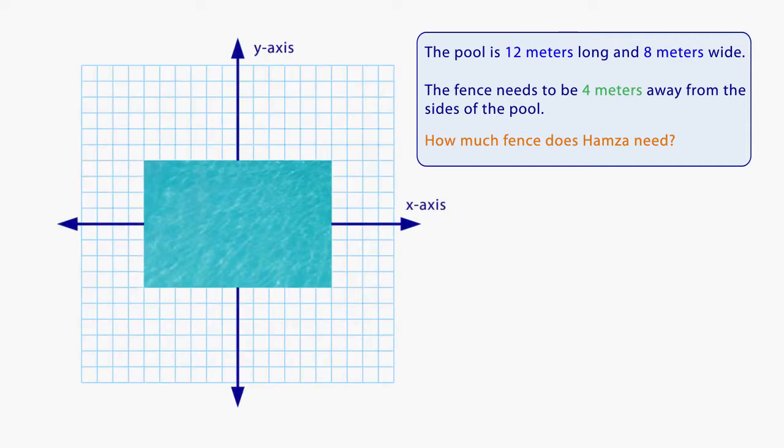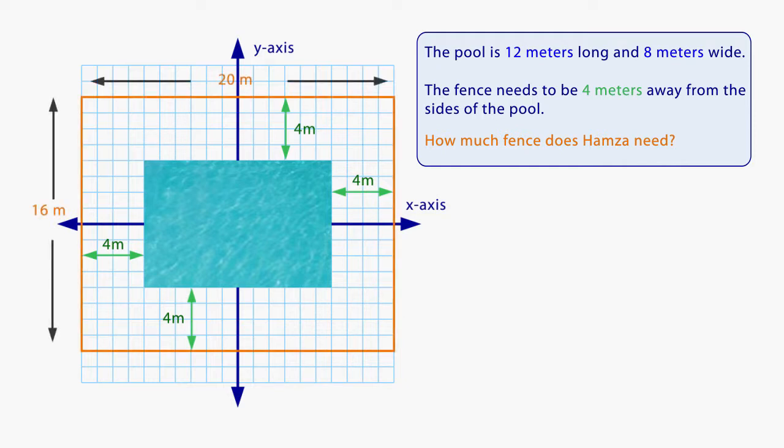We can use a coordinate plane to help answer this question. The pool is 12 meters long and 8 meters wide. The fence needs to be 4 meters from each side of the pool. We count 4 meters right, 4 meters left, 4 meters up and 4 meters down. The fence is 20 meters long and 16 meters wide. Now you add up the sides of the fence. Hamza will need 72 meters of fence.